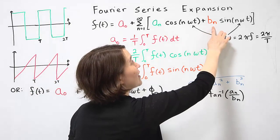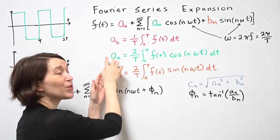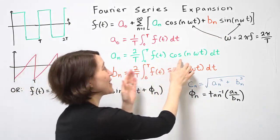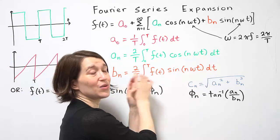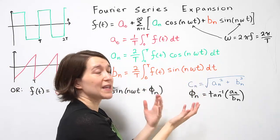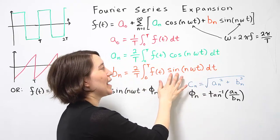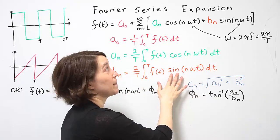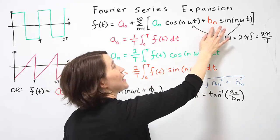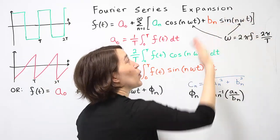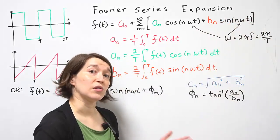bₙ is the same exact thing as defined here, the only difference between these two formulas is cosine and sine. So you do the exact same multiplication equation, and you use sine instead of cosine. So you can solve for that, put that into here, for whichever multiple of the fundamental frequency you're looking at.